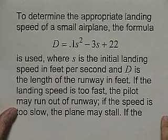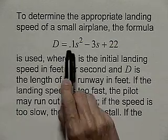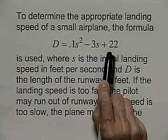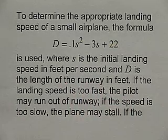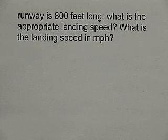Well, let's continue and look at a quadratic model. Here's what we want to do. To determine the appropriate landing speed of a small airplane, the formula D equals 0.1 S squared minus 3S plus 22 is used, where S is the initial landing speed in feet per second, and D is the length of the runway in feet. If the landing speed's too fast, the pilot may run out of runway. If the speed is too slow, the plane may stall. Now, if the runway is 800 feet long, what is the appropriate landing speed, and what is the landing speed in miles per hour?